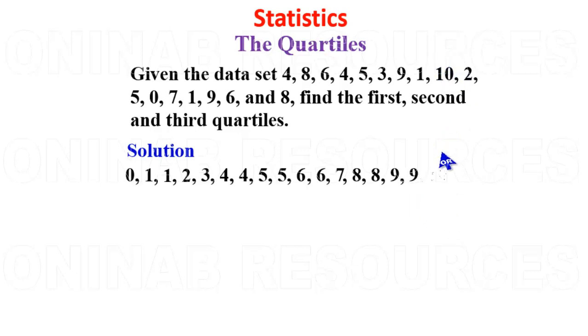So we count to make sure that we have our numbers correct. 1, 2, 3, 4, 5, 6, 7, 8, 9, 10, 11, 12, 13, 14, 15, 16, 17. 1, 2, 3, 4, 5, 6, 7, 8, 9, 10, 11, 12, 13, 14, 15, 16, 17. So it is complete.